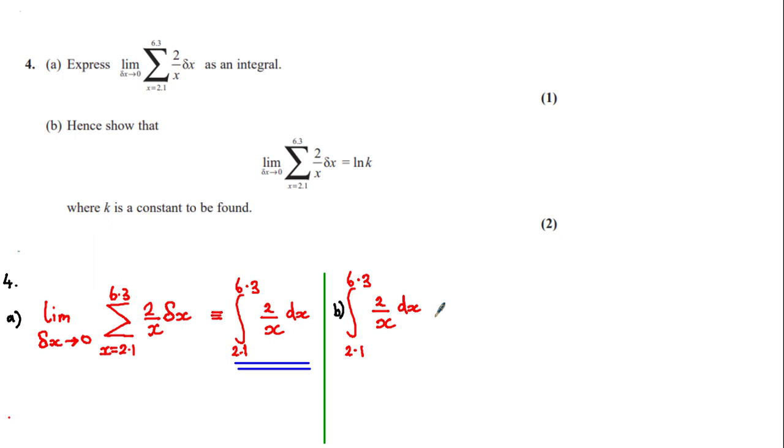And so therefore, let's go ahead and integrate this function from 2.1 to 6.3. So the integral of 2 over x with respect to x between these bounds is equal to 2 ln x from 2.1 to 6.3. And now we just have to evaluate between these bounds.